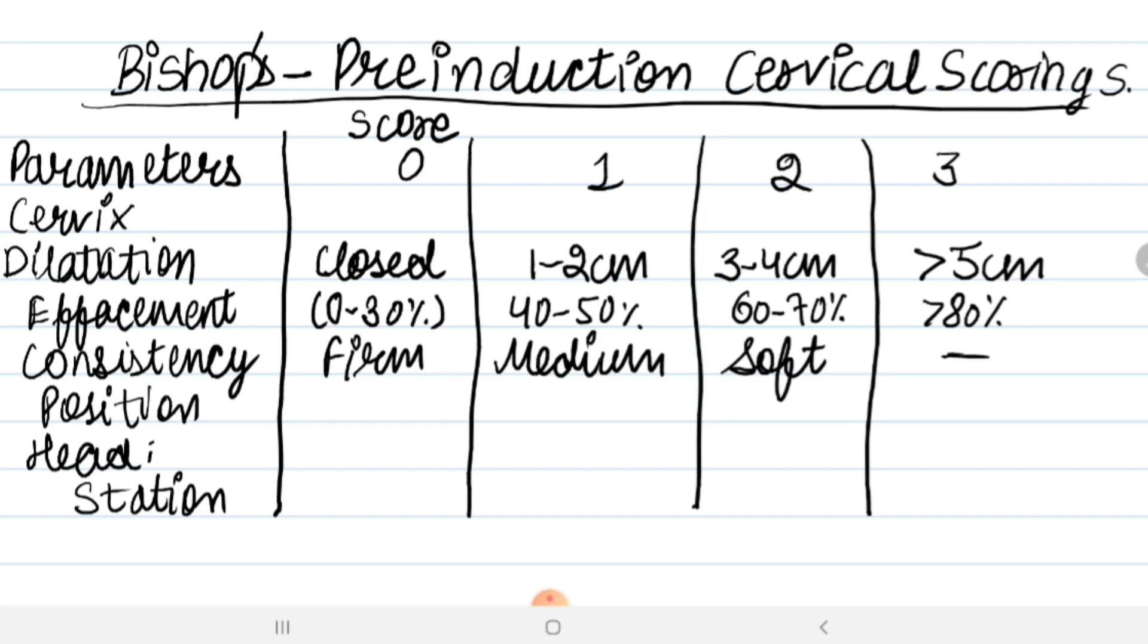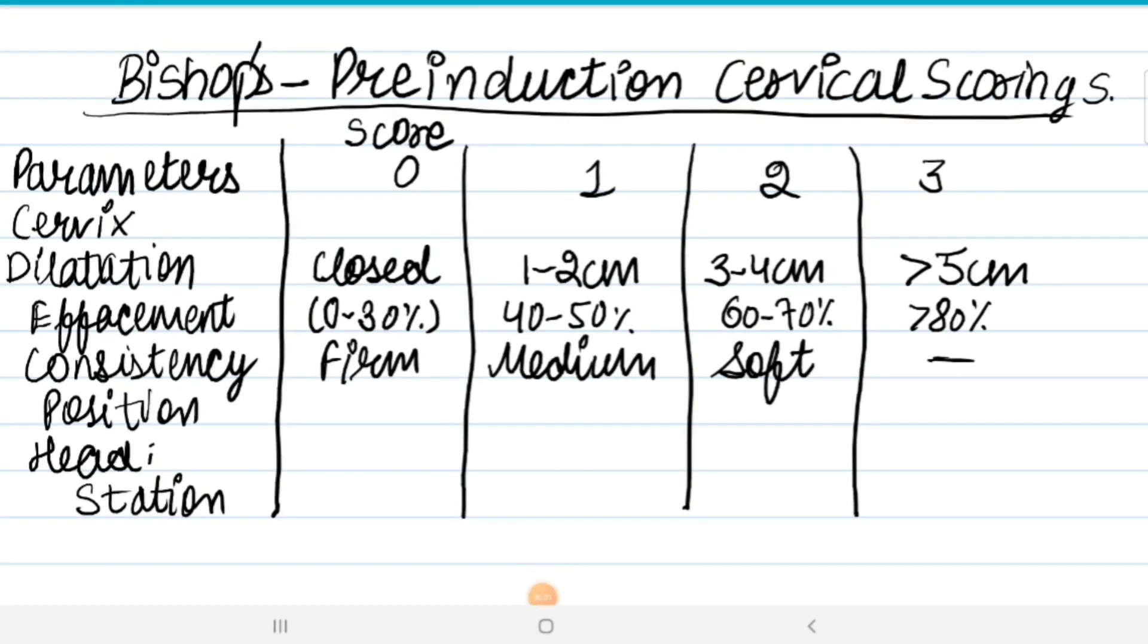Next is position. Position refers to the position of the cervix relative to the fetal and maternal pelvis. If position is posterior, the score is 0. If the position is mid-position, the score is 1. If the position is anterior, the score is 2.